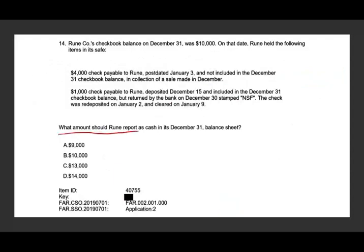What amount should Rune report as cash in its December 31st balance sheet? Rune's checkbook balance on December 31st was 10,000. On that date, Rune held the following items in the safe: a 4,000 check payable to Rune post-dated January 1st — not included in the checkbook, which is correct; and a 1,000 check payable to Rune deposited December 15th and included in the December 31st checkbook, but the check was returned by the bank stamped NSF (non-sufficient funds).